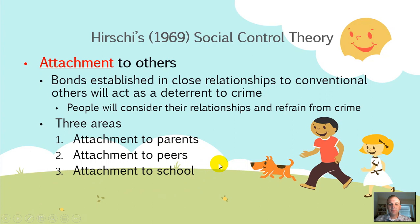Attachment to school is the third domain. All three of these attachment domains have been isolated and examined through empirical research over the past 50 years, and a wealth of research has been directed toward control theory. It is one of the most widely tested and validated theories within criminal justice and criminology. People have an attachment to their school — to teachers and school spirit — and don't want to let their teachers down.